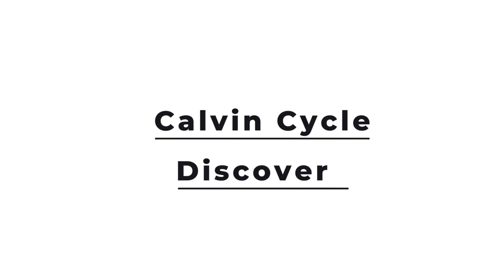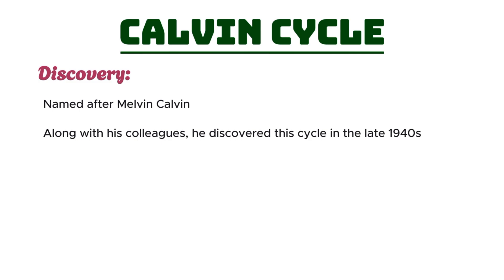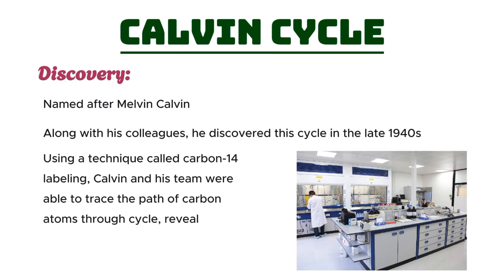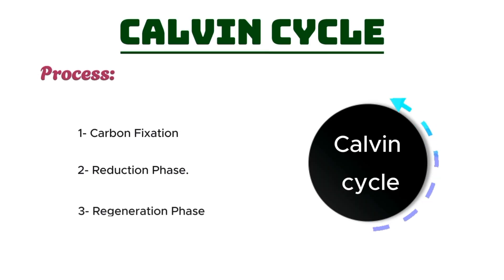But how did we come to understand this process? The Calvin Cycle is named after Melvin Calvin, an American scientist who, along with his colleagues, discovered this cycle in the late 1940s. Using a technique called carbon-14 labeling, Calvin and his team were able to trace the path of carbon atoms through the cycle, revealing the intricate steps of this essential process. Now, let's take a closer look at the three detailed phases of the Calvin Cycle.